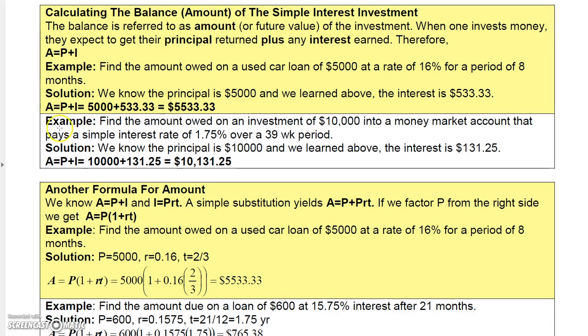On that previous example up there, the one I just did, if we'd wanted to know the amount owed, like if you had cashed out that investment, then the amount owed to you would have been not just the interest, but it would have been the principal plus the interest. So the amount that you would be paid if you cashed out that money market account would be 10,000 plus $131.25, which is $10,131.25. So all you have to do to get the amount is just add your principal plus your interest.